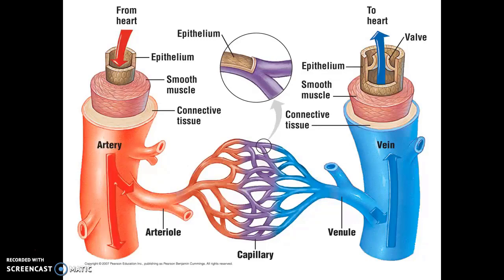Comparing the walls of the arteries and veins, we can see that these are larger blood vessels, that there are layers of epithelial tissue both outside and inside, and there are layers of connective tissue and also smooth muscle. The smooth muscle walls of the arteries are just a bit thicker than those on the veins. However, veins have something that arteries don't, and those are one-way valves, similar to the valves we saw in the heart.